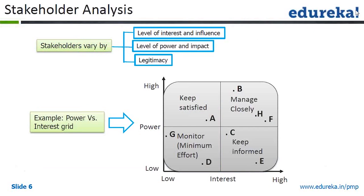Once we identify the stakeholders, we need to analyze them. We look at the levels of interest and influence the stakeholder has, or the level of power and impact, or the legitimacy of the stakeholders. From this analysis, we create a power-interest grid.